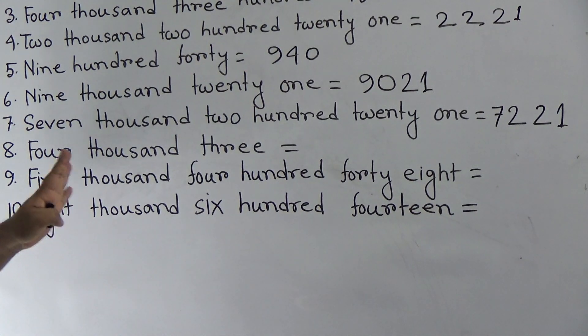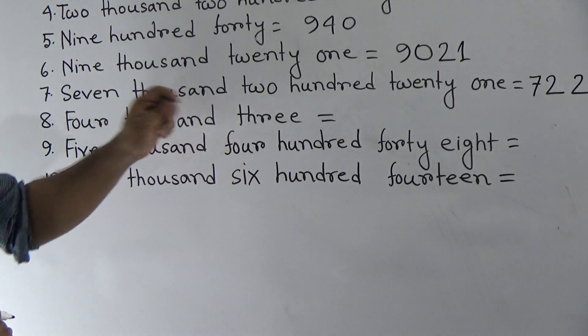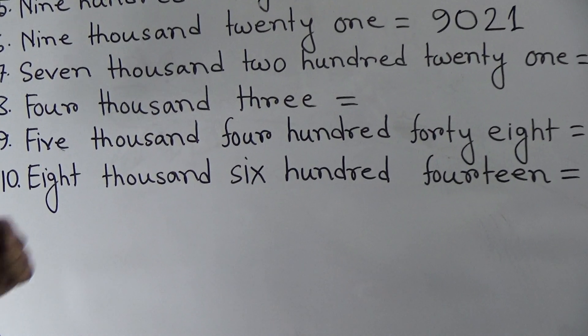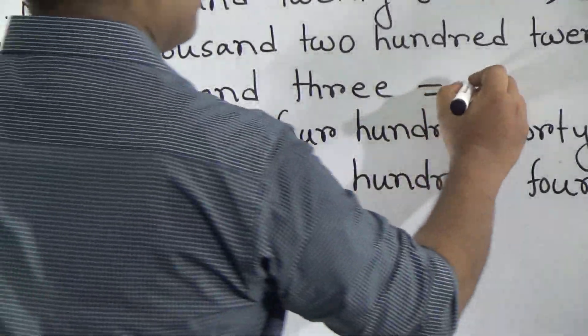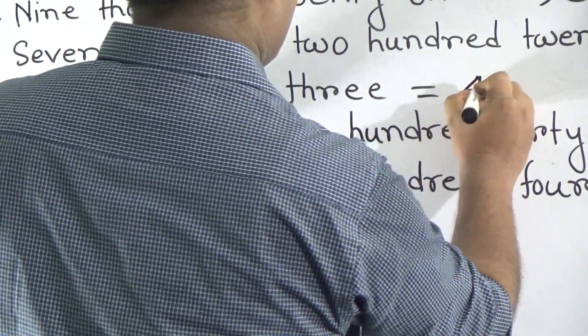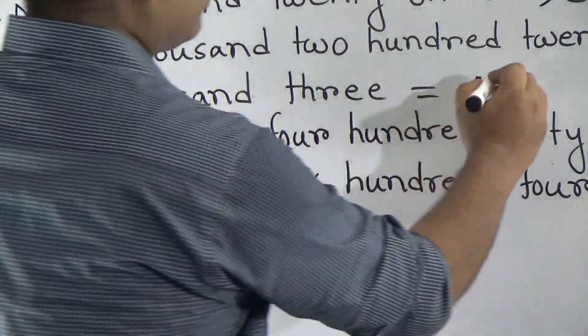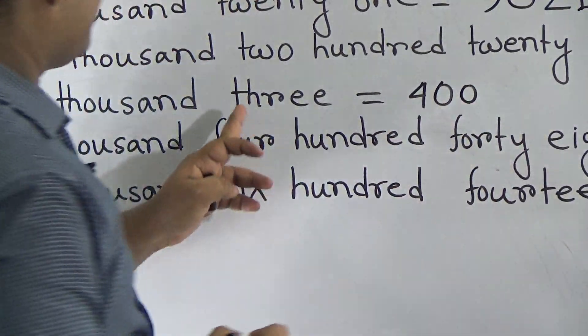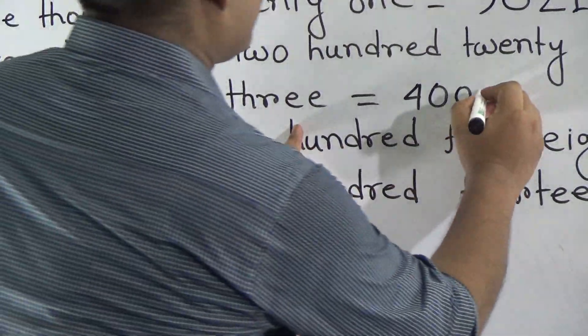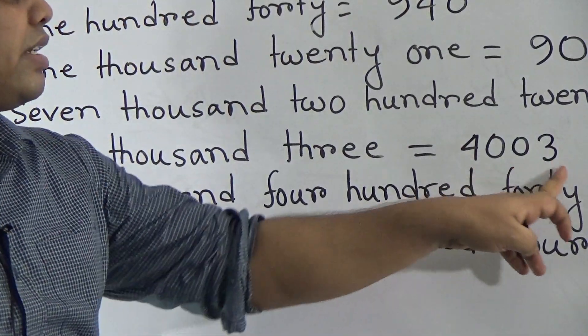Then, number 8, 4003. My student notice, 100 place and 10th place is absent. So, we write 4000. That means, 4 first. Then, 100 place and 10th place is 0. So, write 100 place and 10th place is 0. Then, write 3. So, this is called 4003.